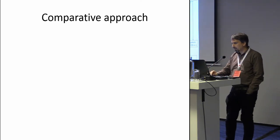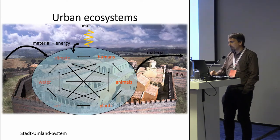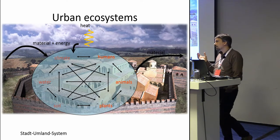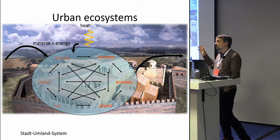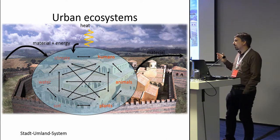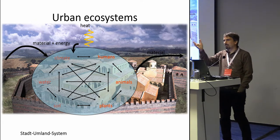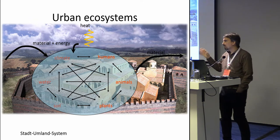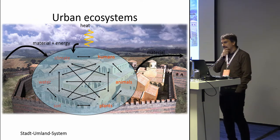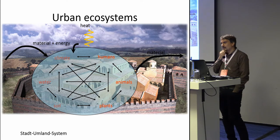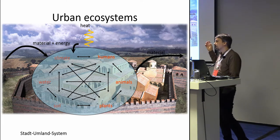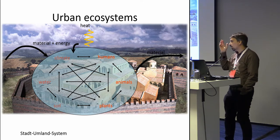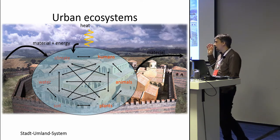We have now seen quite different examples of agglomeration just from the Middle Ages, and other papers today have shown even more medieval agglomeration cases. What I think could be an interesting point for understanding these changes is to look at these towns as an urban ecosystem. Several papers we've heard today already presented ideas very close to that.